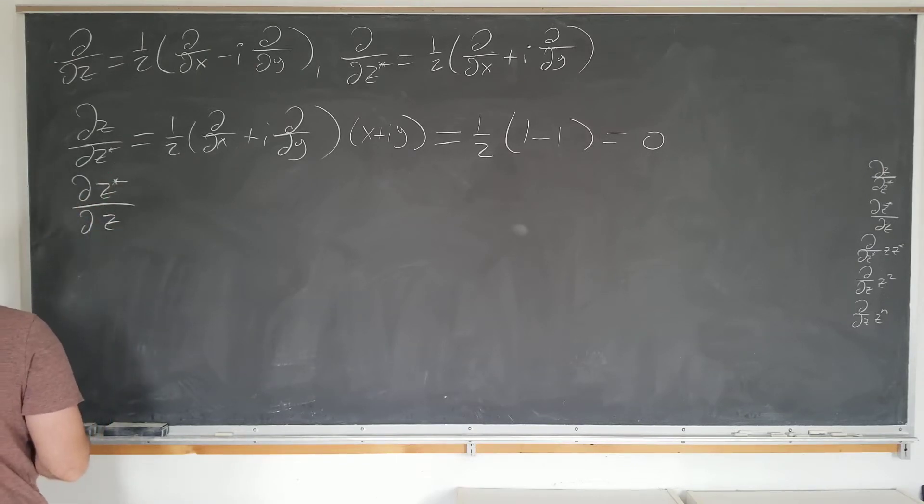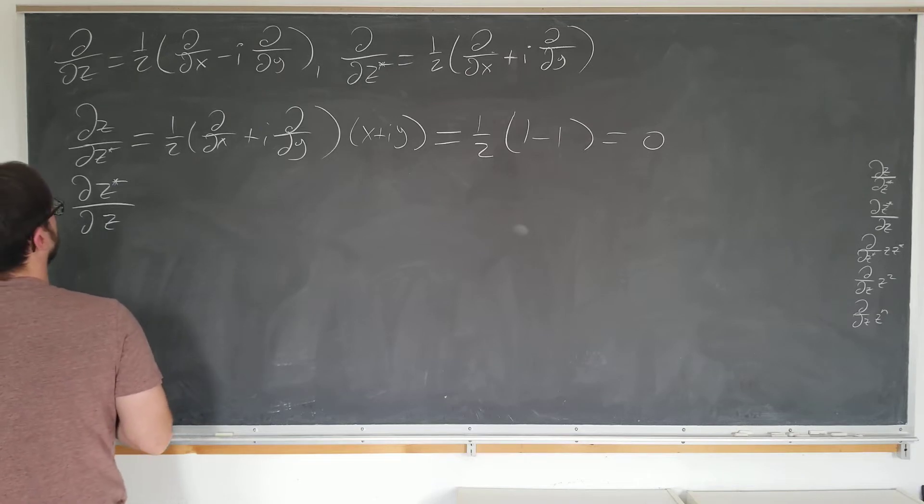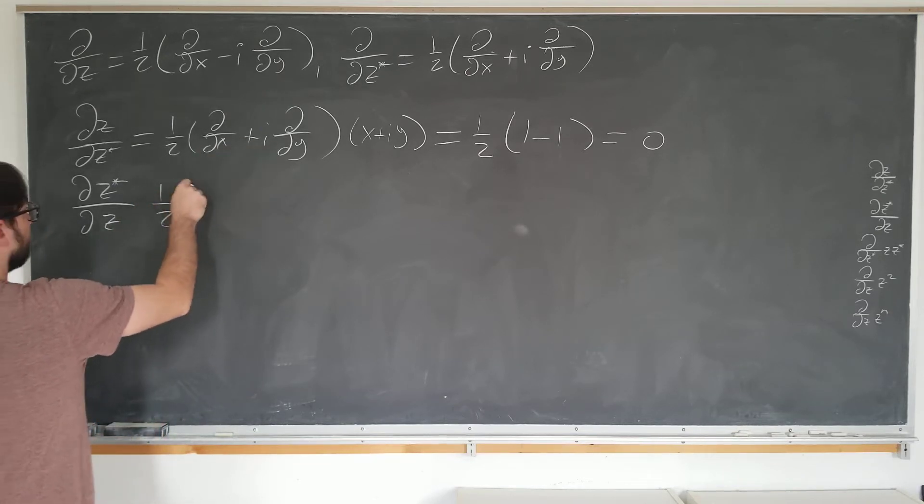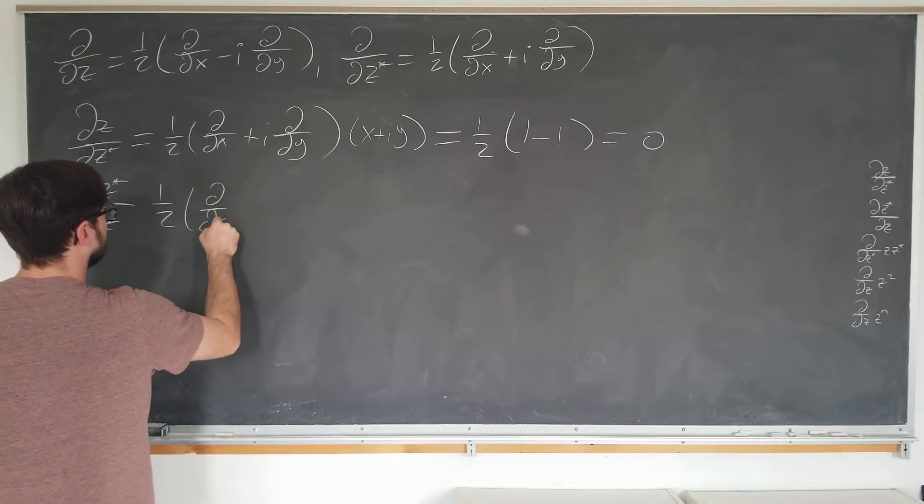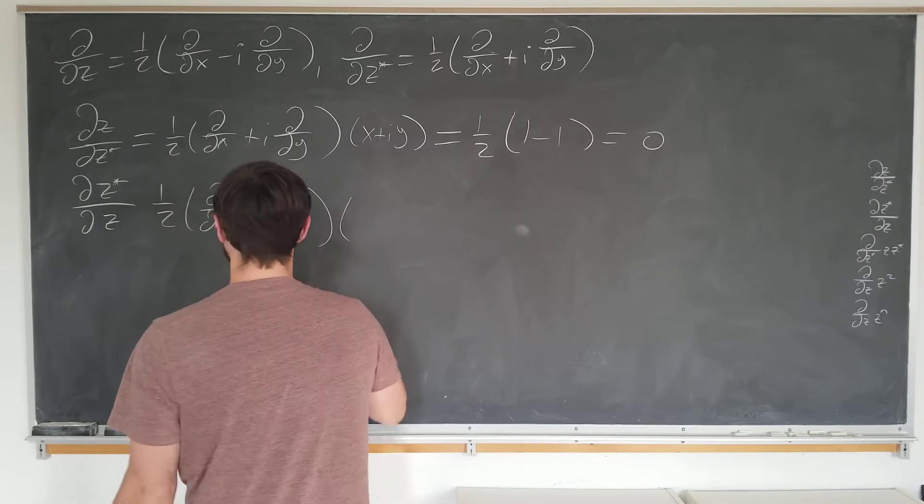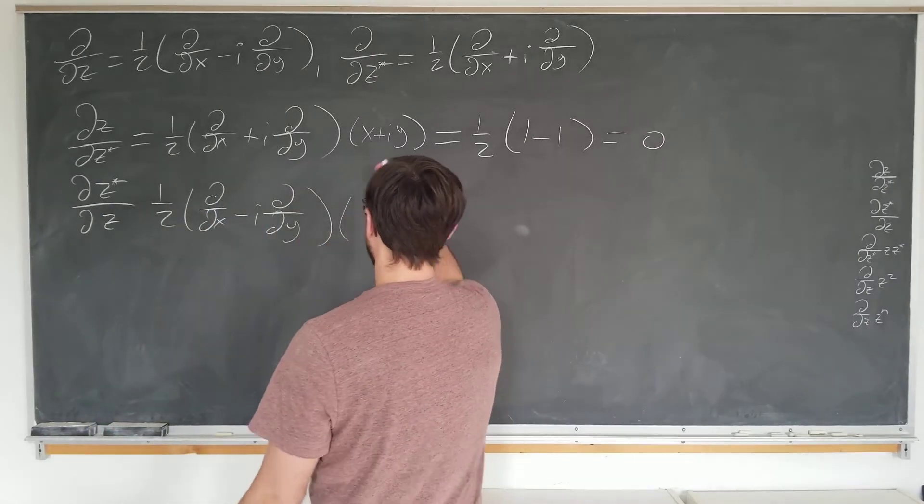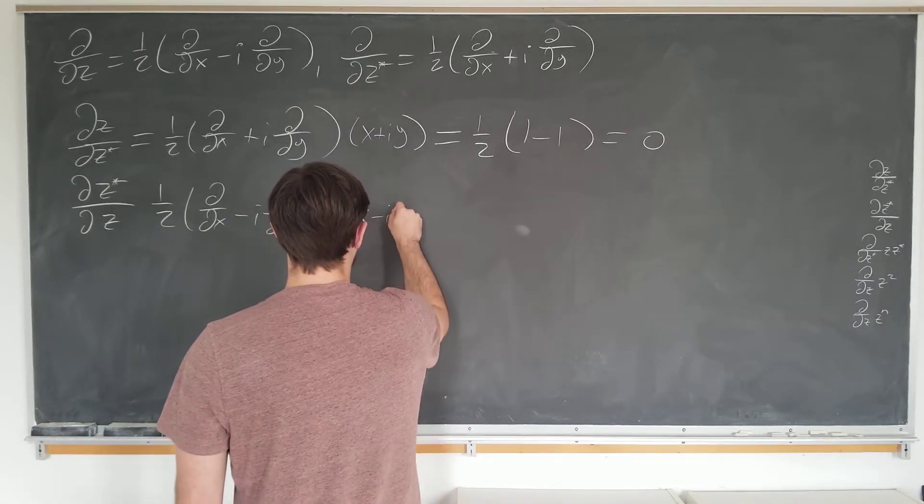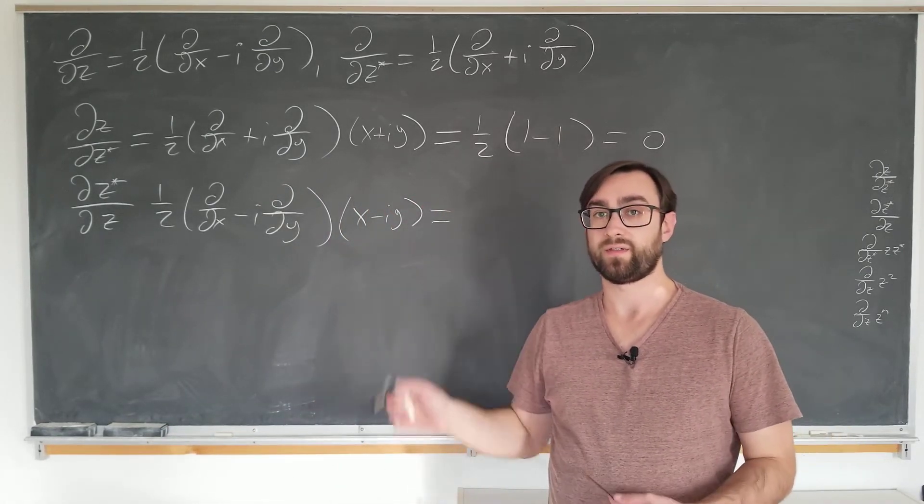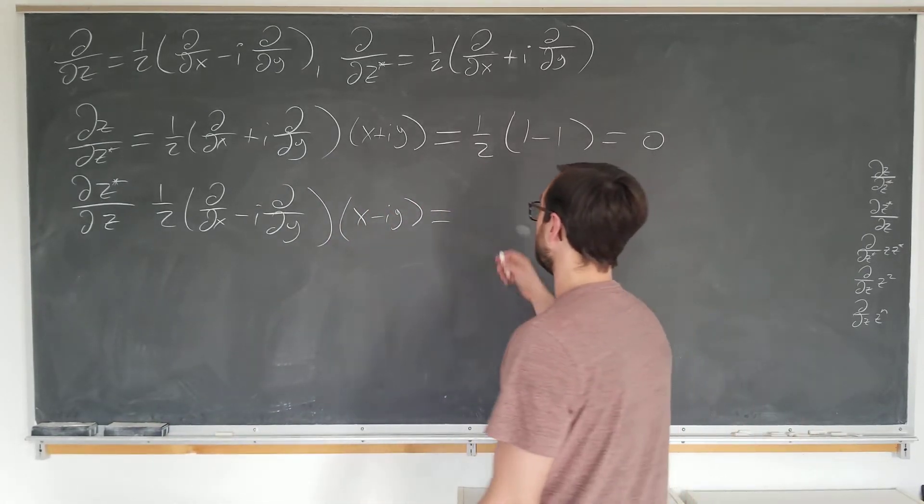All right, the dz operator. Well, that is going to be the same thing as above with a minus sign: d by dx minus id by dy, and z star is just the same thing with a minus sign. So because we put two minus signs, you can see how they could cancel out to become the same relation here.